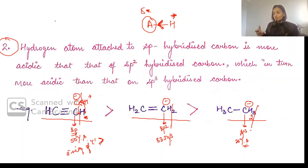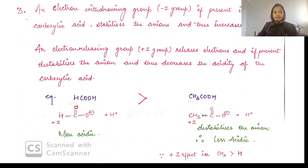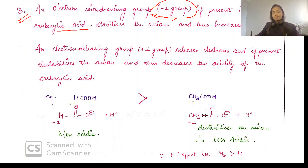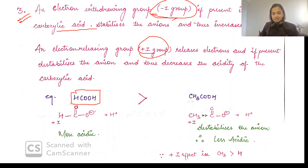Strong acids have weak conjugate bases. So this is a weak conjugate base. Now the third category: if you have any electron-withdrawing group present in carboxylic acid, it will stabilize the anion and that increases the acid character. A plus-I group will release electrons, destabilizing the anion. So formic acid will form this conjugate base.